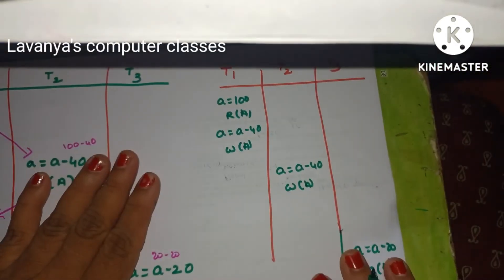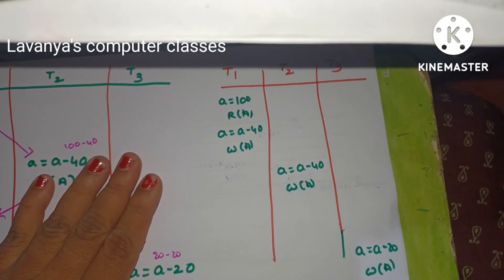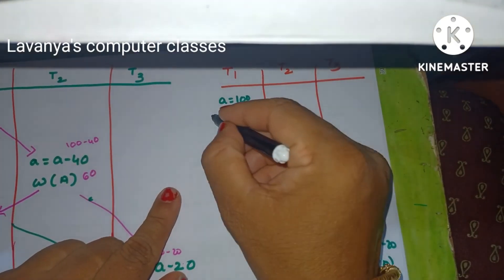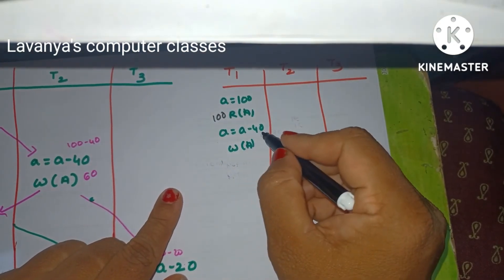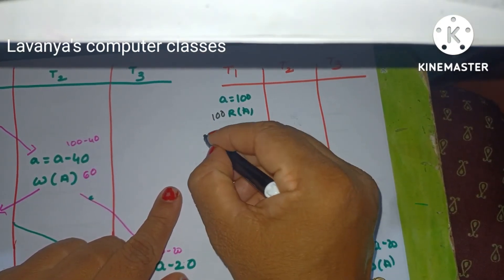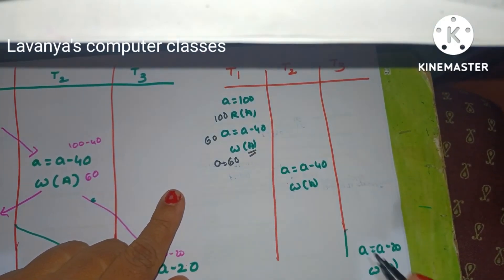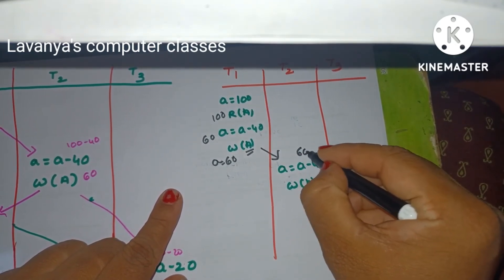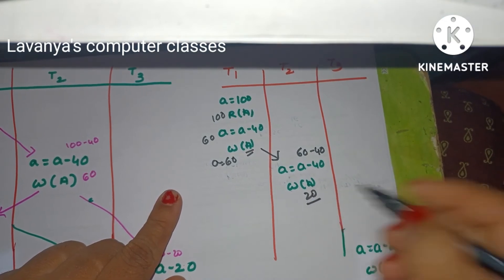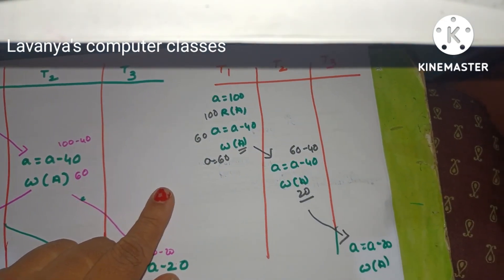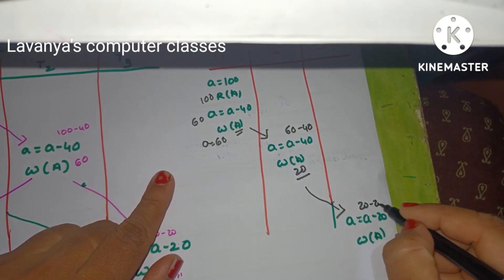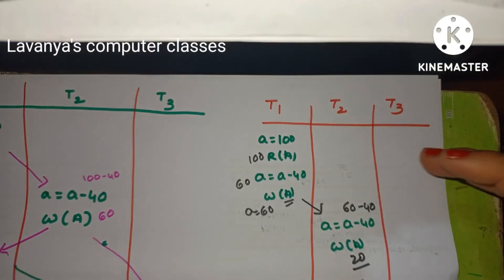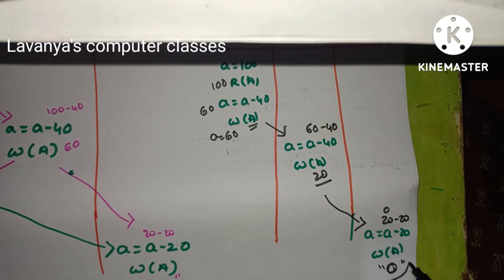This new arrangement is a serial schedule. Now execute it: a = 100, read a — a is 100. a = a − 40, that is 60; write a — a is 60. Next transaction: a = a − 40, 60 − 40 = 20; write a — a is 20. Then a = a − 20, 20 − 20 = 0; write a — final answer is 0.